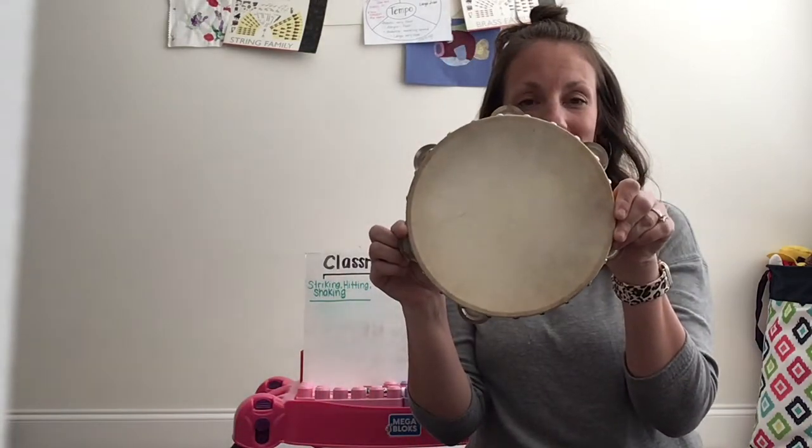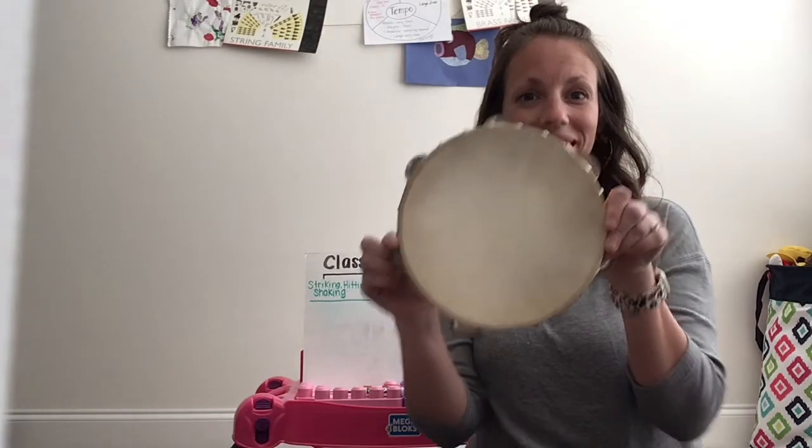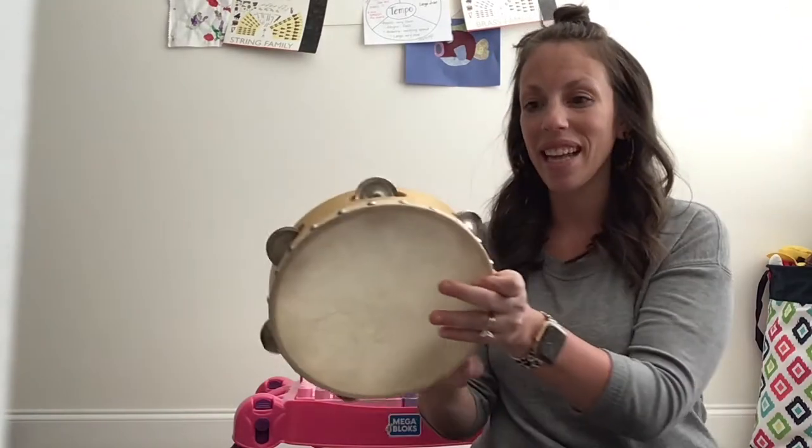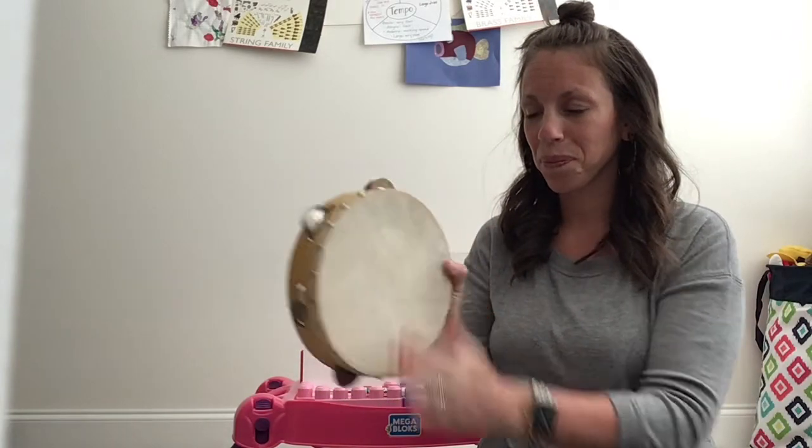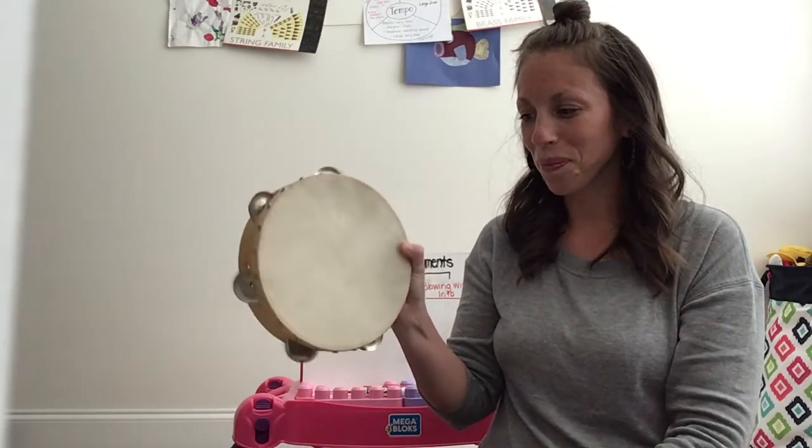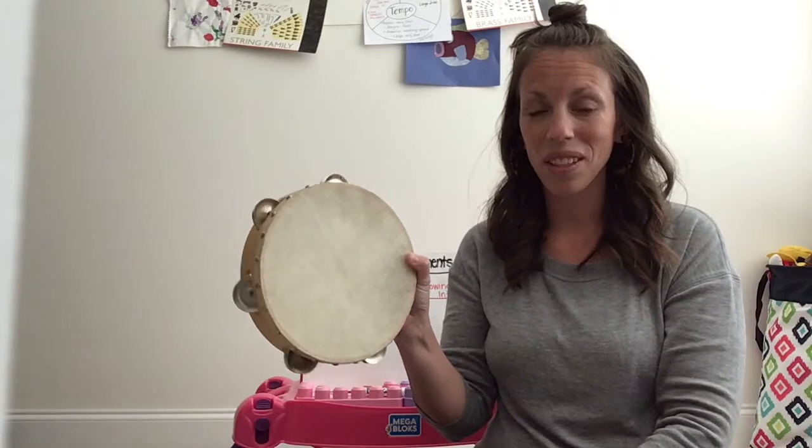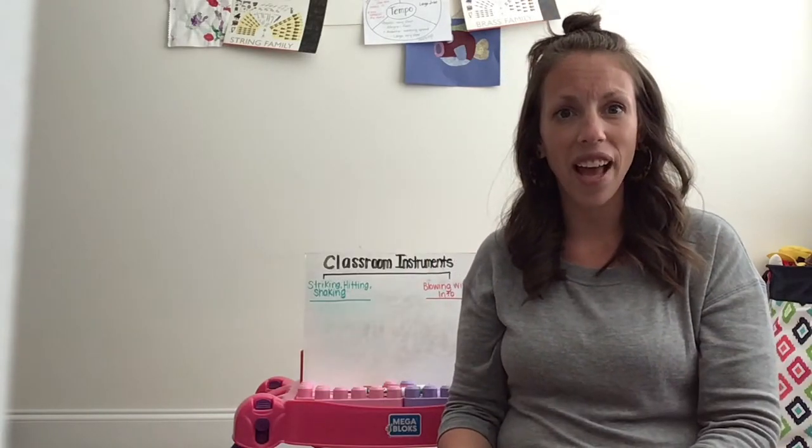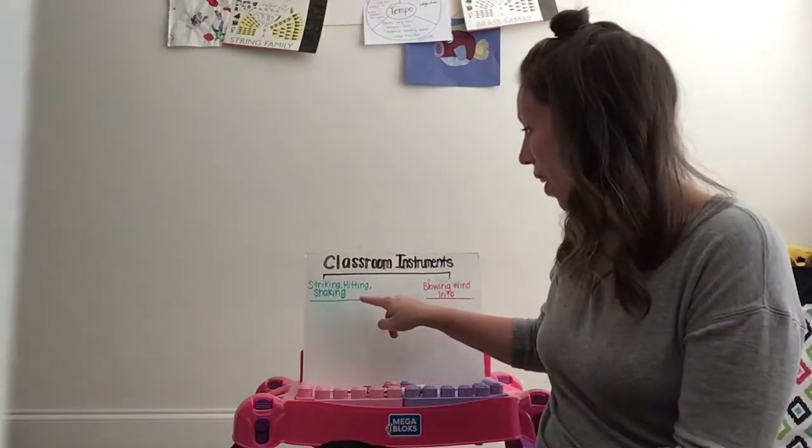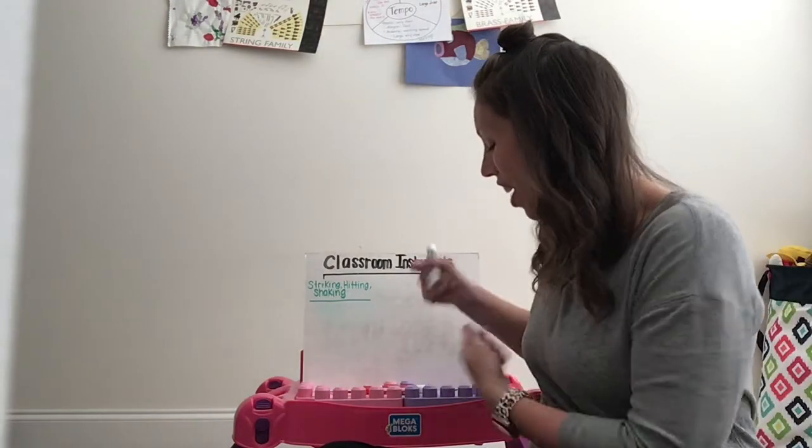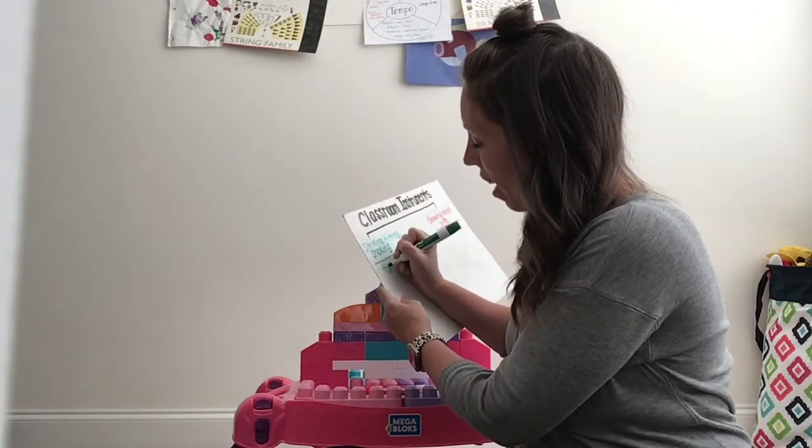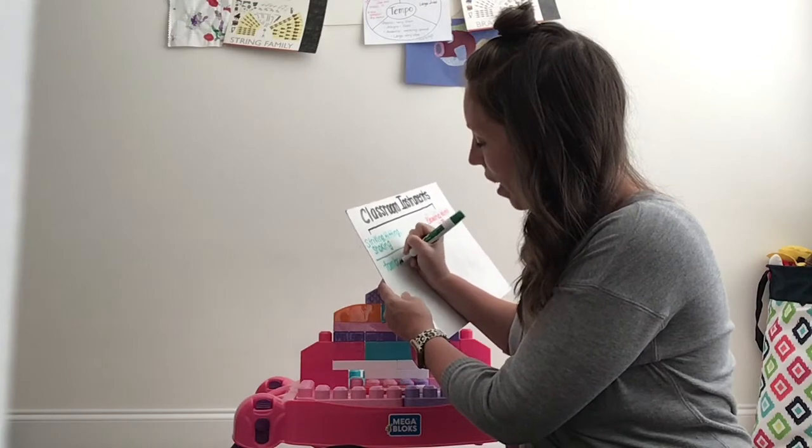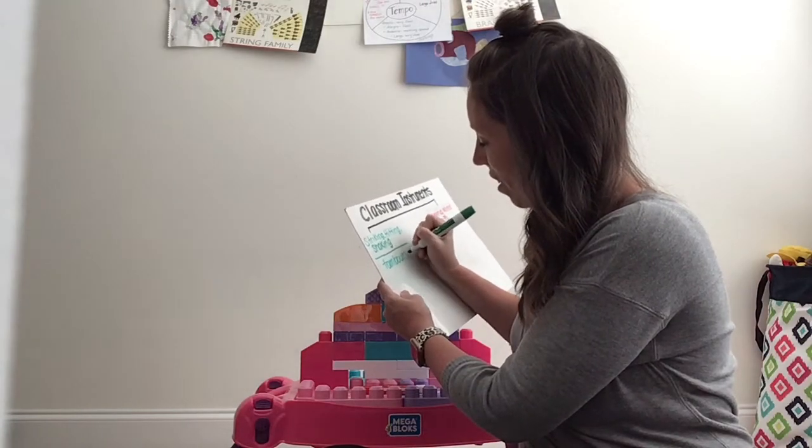Instrument number one. What is it? That's right, it's a tambourine. Let's review what it sounds like. Did you notice how I played it? Where should we classify it? That's right, under striking, hitting, and shaking. Let's classify our tambourine under that category. Great job.